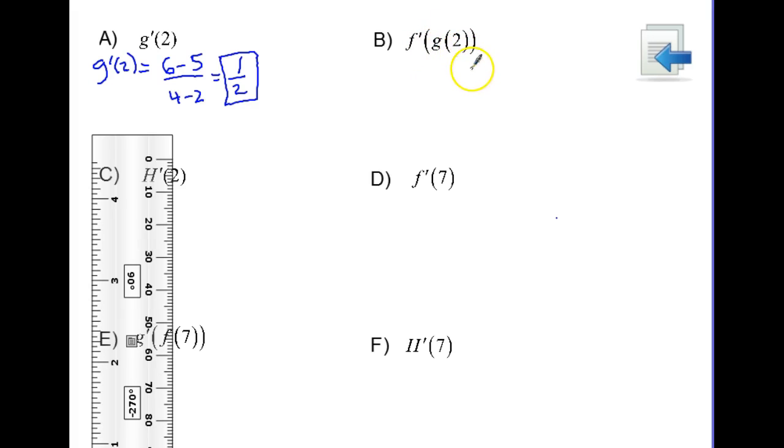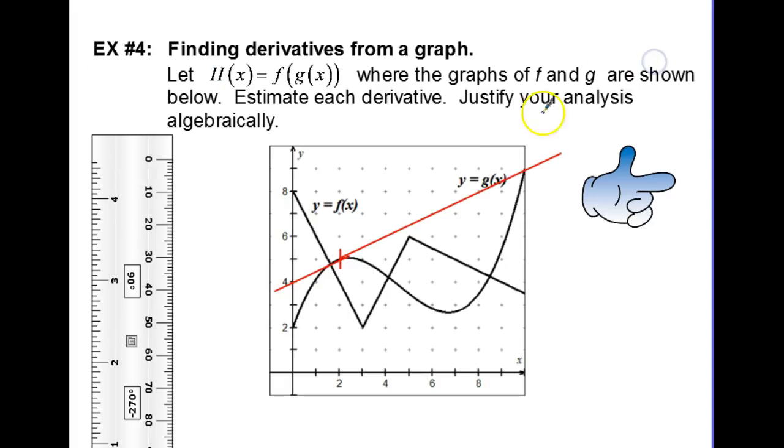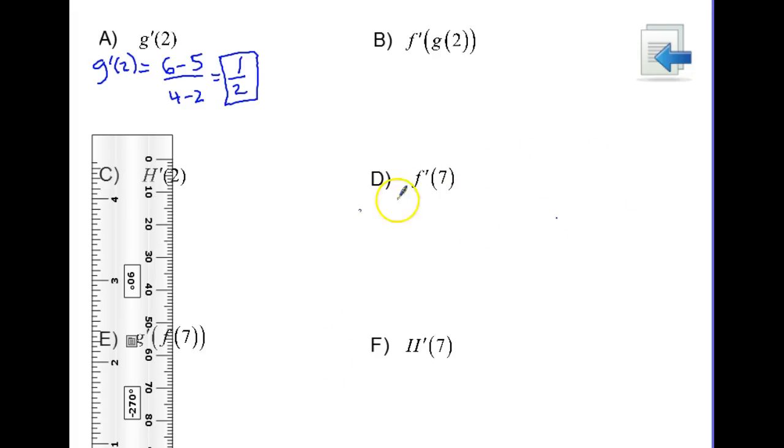So the first thing I need to do is find out what G of 2 is. So looking at my graph, again G is going to be the cubic and G of 2, that was the point that we just used, that was 2, 5. So it looks like the y value is going to be 5. So G of 2 is equal to 5.